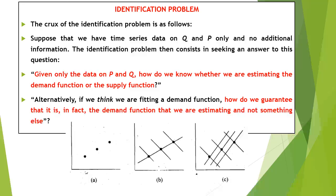If anyone is interested in measuring the demand function, they can use the same data. Similarly, someone interested in measuring the supply function will also use the same data. Therefore, we need some criteria which will enable us to identify or verify that the estimated coefficients belong to one or the other relationship. Such criteria are known as identification conditions or rules of identification. The observed data consists of market outcomes; we have no knowledge of the conditions of supply and demand — we only know that the data represents equilibrium points, i.e., the intersection points of demand and supply. The first segment of the figure shows three data points.